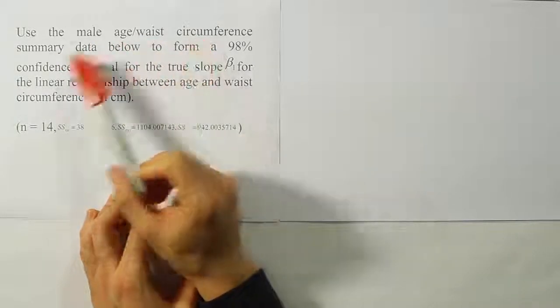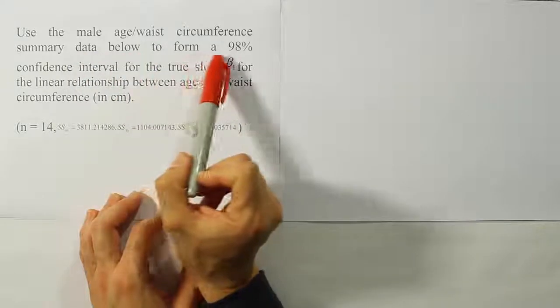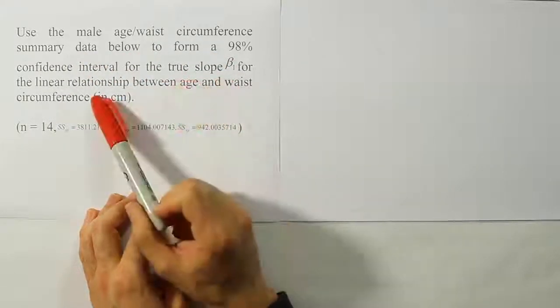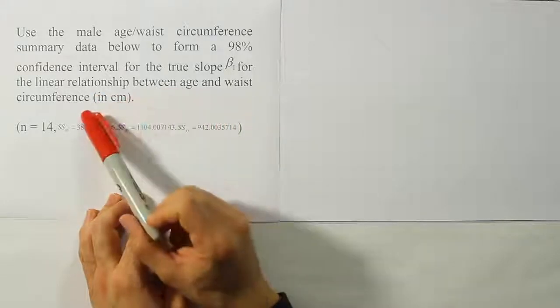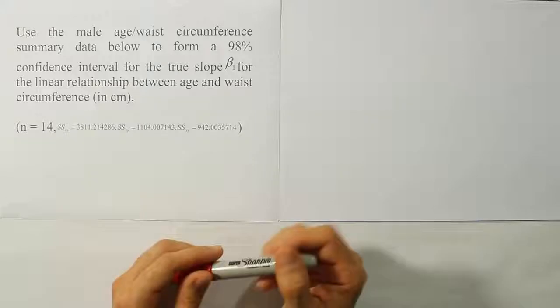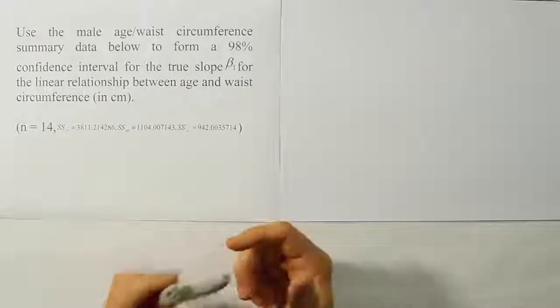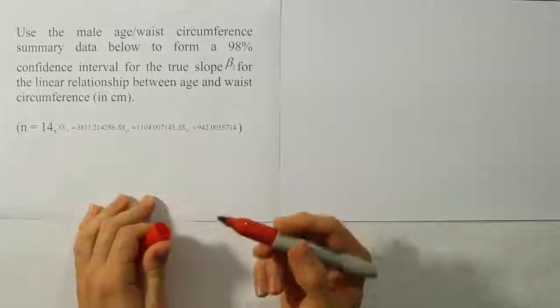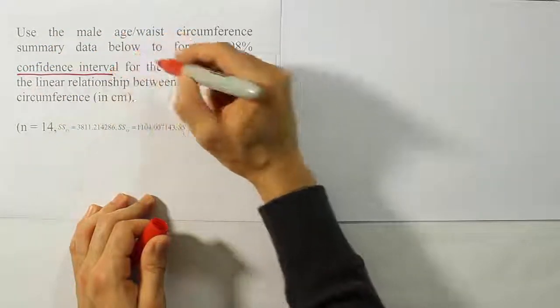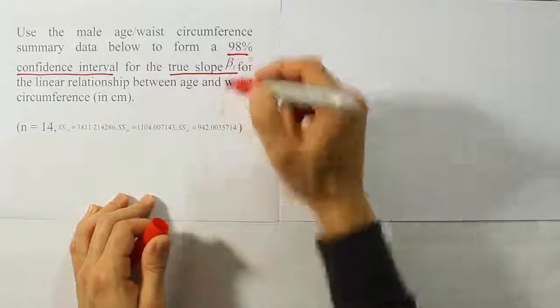Use the male age-waist circumference summary data below to form a 98% confidence interval for the true slope beta1 for the linear relationship between age and waist circumference in centimeters. Here's the data they give us below. So let's start out by recognizing what they're asking us to do. It says that they want us to form a 98% confidence interval for the true slope beta1.